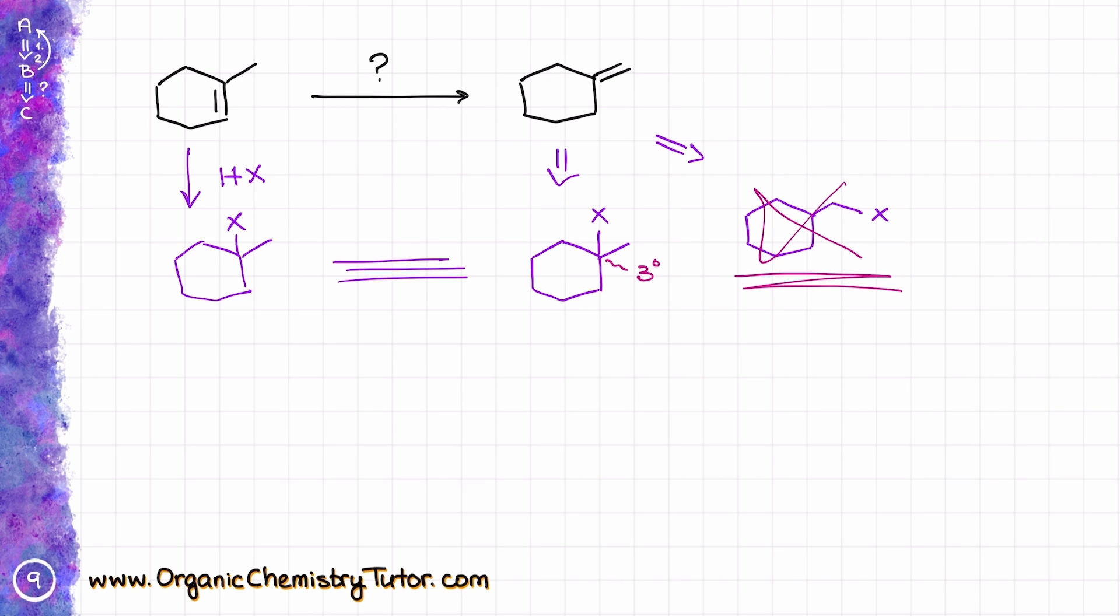So when it comes to reactions where you are trying to move the double bond, that essentially means that you are going to convert that double bond into a different functional group that can also serve as our leaving group, and then we're going to do an elimination reaction.